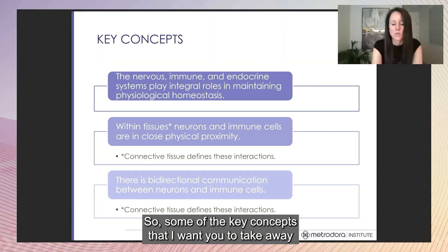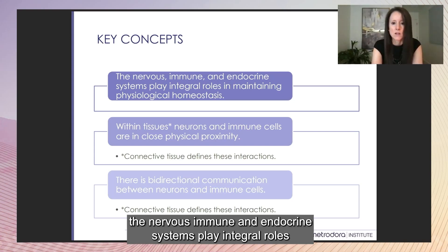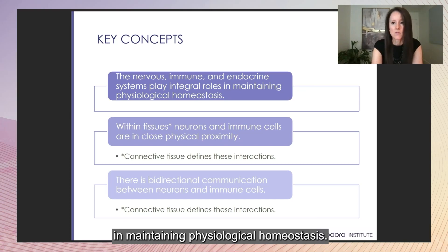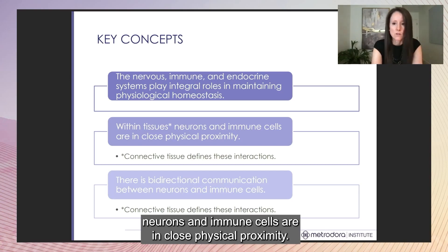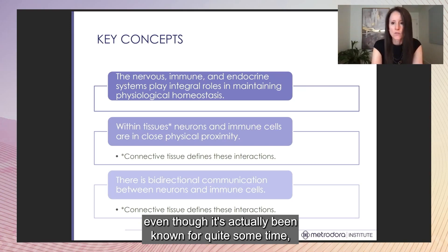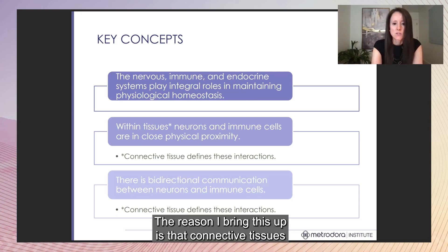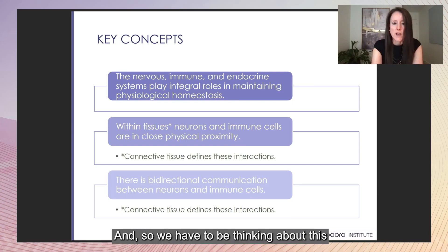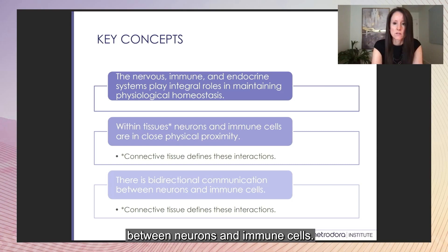Some key concepts I want you to take away: the nervous, immune, and endocrine systems play integral roles in maintaining physiological homeostasis. Within tissues, neurons and immune cells are in close physical proximity — this is almost like a newly discovered concept, even though it's been known for some time. Connective tissues define these interactions, so we have to think about this when considering disorders that impact connective tissue. There is bidirectional communication between neurons and immune cells, and connective tissue is defining these interactions.